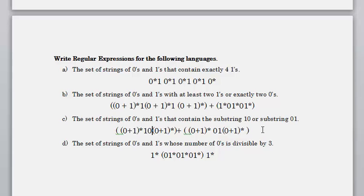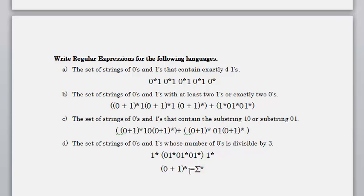(0|1)* is also equivalent to Σ* (sigma star). So you can also write (0|1)* as Σ*, and replace (0|1)* with sigma star wherever it appears.